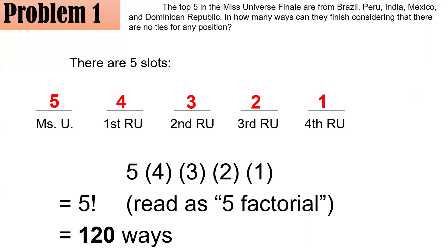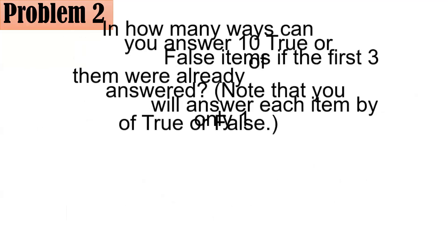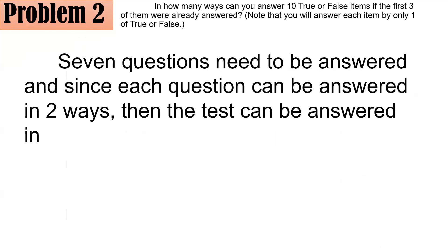Problem 2: In how many ways can you answer 10 true-or-false items if the first three of them were already answered? Note that each item is answered by only one of true or false — not both — and it is assumed that all items will be answered and no item will be left blank. Since the first three are already answered, only seven questions remain — items four through ten.